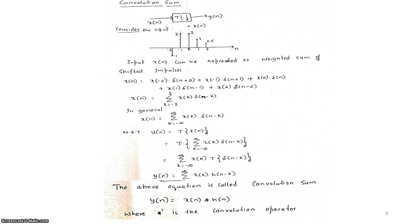Now we will discuss the derivation for the convolution sum. The system is represented with input x(n), output y(n), and transformation operator T, so y(n) = T{x(n)}. Consider the input x(n) with samples from n = -2 to n = +2: at n = -2 the amplitude is -1, at n = -1 it is 2, at n = 0 it is 2, at n = 1 it is 1, and at n = 2 it is 0.5.